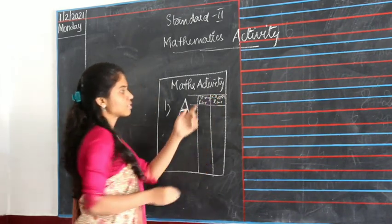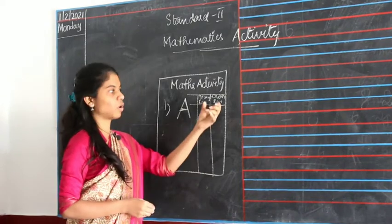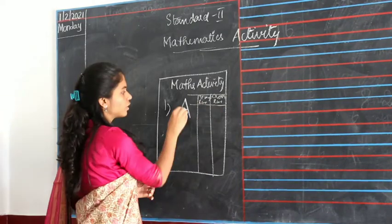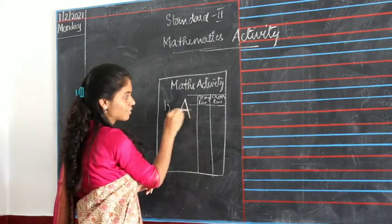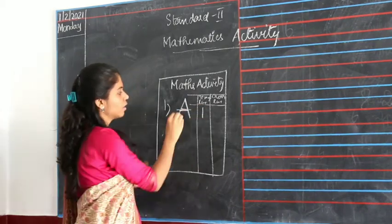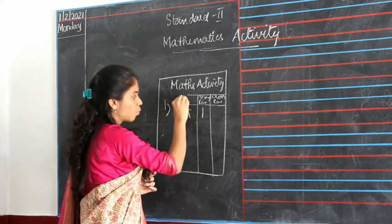Straight line in the first column and cross line in the second column. So here in A, how many straight lines are there? Only one straight line, so one you have to write. And here, one cross line and one more cross line, which is two.